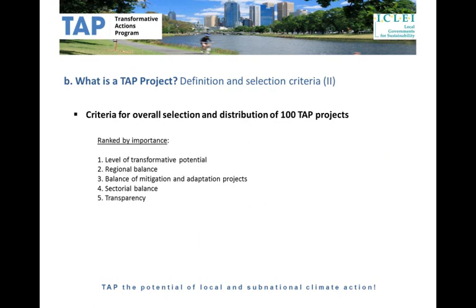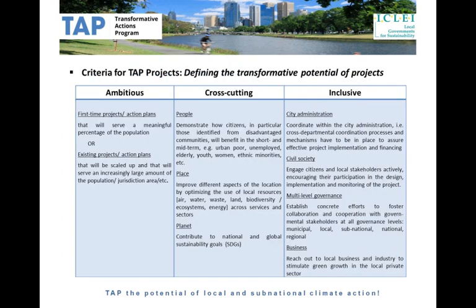If we look at the criteria for the overall selection and distribution of up to 100 TAP projects, five criteria will be taken into account. First, the level of transformative potential of the project. Second, the regional balance — whether projects are distributed fairly equally between the North and the South. Third, the balance of mitigation and adaptation projects. Fourth, the sectorial balance — projects can be in transport, energy, biodiversity, housing, or education, so we are looking for diversity. And finally, transparency — how informed the different applications are.